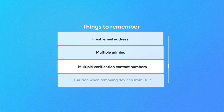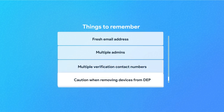Add multiple verification contact numbers — provide more than one contact number for OTP verification in case one gets lost. Also note that a device that was enrolled in DEP once and then removed cannot be added again directly. You need Apple Configurator to get it into DEP again.